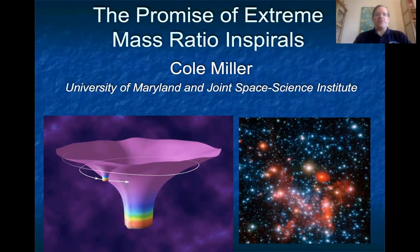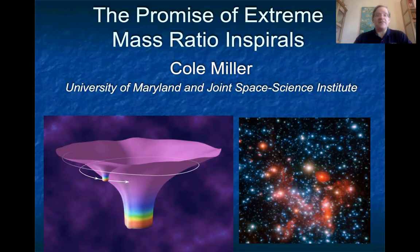Extreme mass ratio inspirals, in which a stellar mass object such as a black hole or a neutron star spirals into a supermassive black hole in the center of a galaxy, are among the most important potential sources for LISA. This is because the inspiral has thousands of cycles within the extreme gravity of the black hole and within the LISA sensitivity band. As a result, these events will provide unique probes of strong gravity and the environments of supermassive black holes.